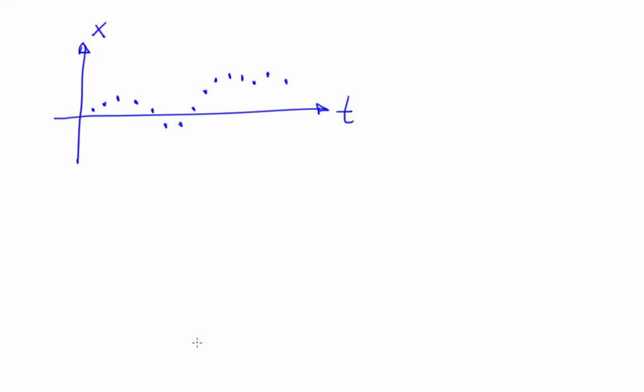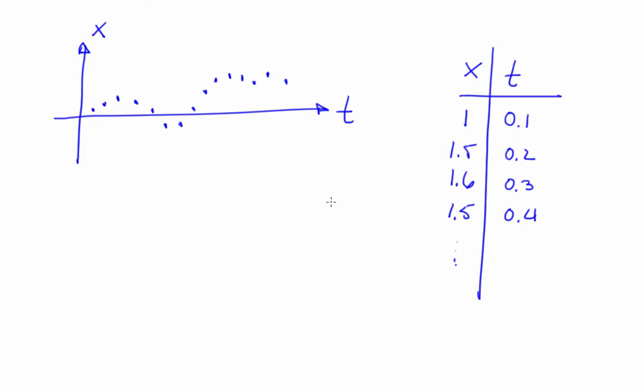Most commonly, you have a single series of measurements from a system — a table of X's and T's where the X's are scalars and the timestamps of the measurements are monotonically increasing. Sometimes you'll have more than one measurement; we'll get back to that later.